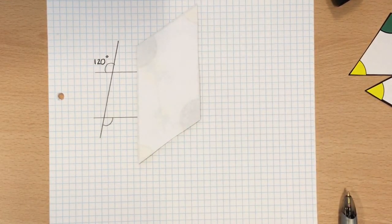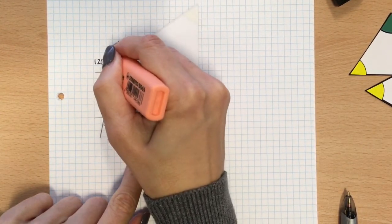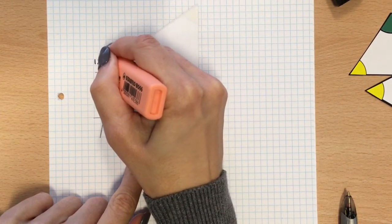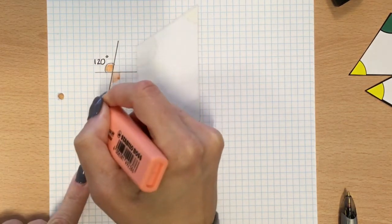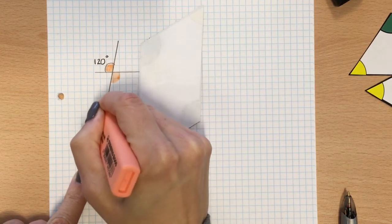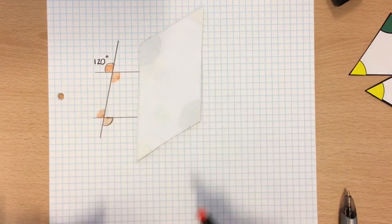So I'm going to use two different colours now. So I'm going to colour the one I know in orange, and I know the one opposite is also orange, so that means I know that this one is orange, and I know that this one is orange.